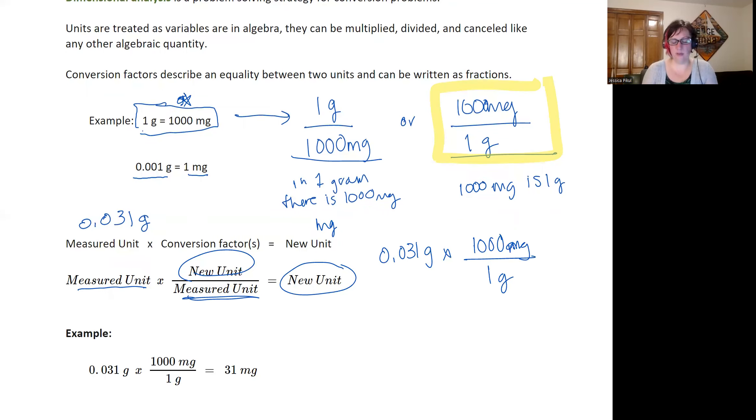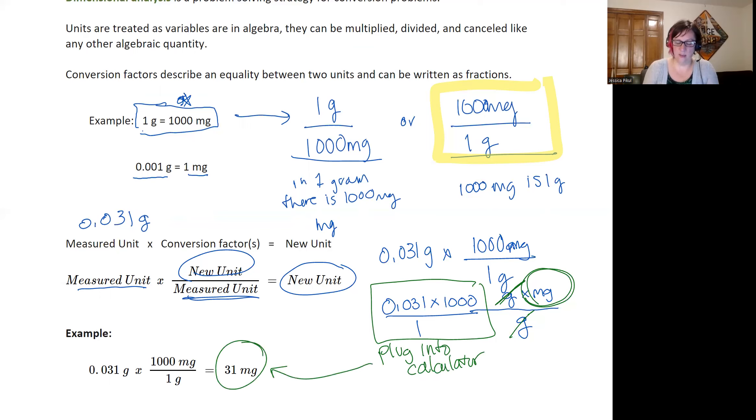Now, if I were to multiply this all together, I could actually combine this to be 0.031 times 1000 divided by one. And the units for this would be grams times milligrams divided by grams. Using this idea that anything that's the same on the top and the bottom of a fraction, we can cancel. We can then cancel out the grams here. And we're only left with milligrams. This right here, I'll plug into my calculator and I'll get this answer right here, 31 milligrams.